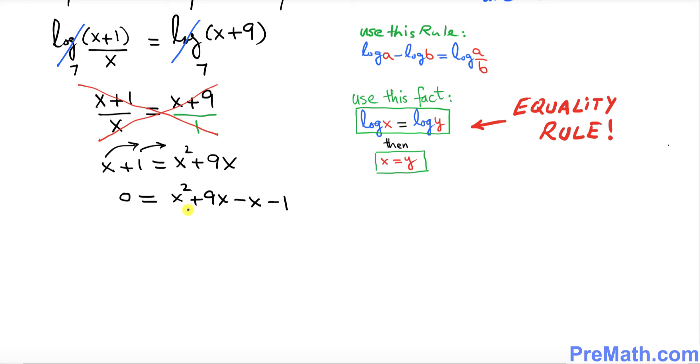Let's go ahead and combine the like terms. This is going to become x² + 8x - 1 and I can put a 0 on this side.